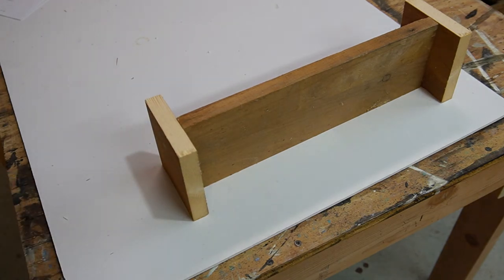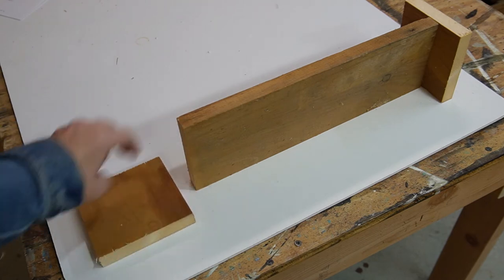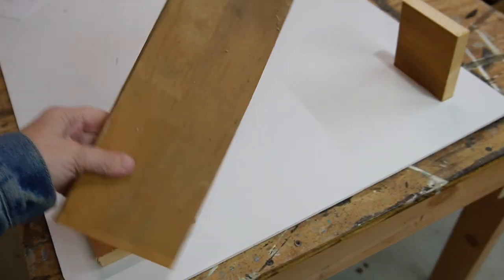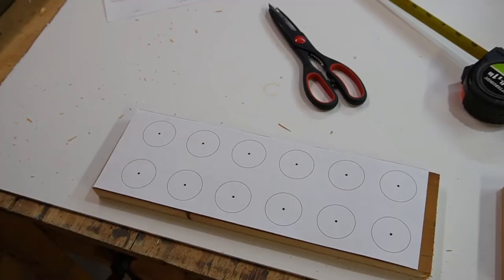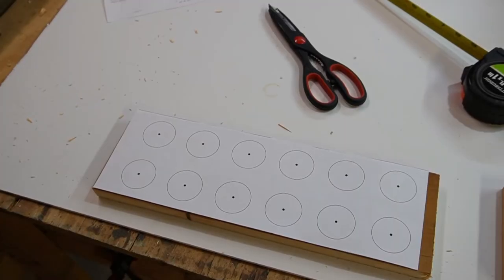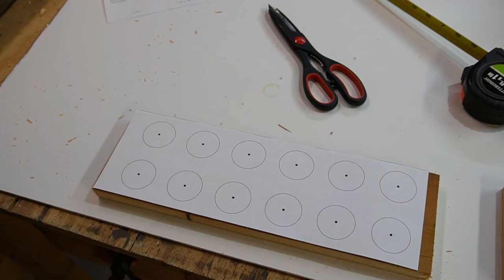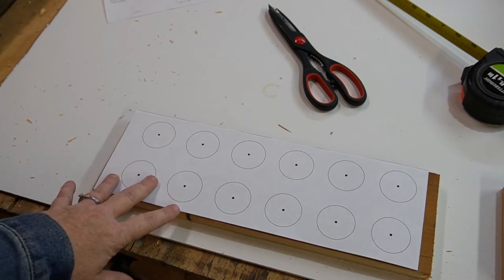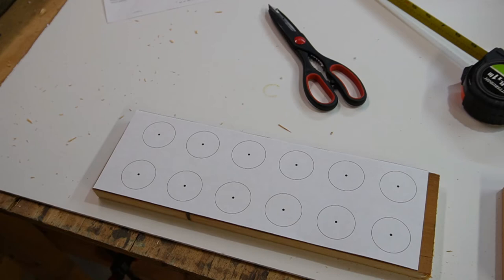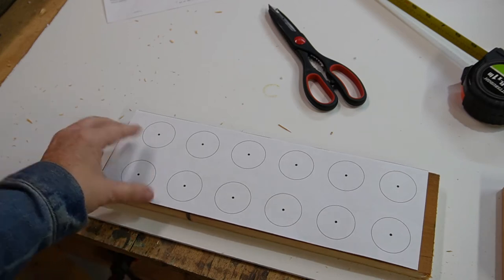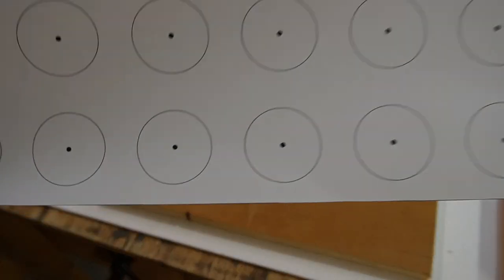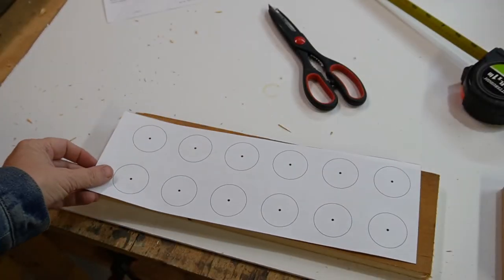But the first thing that we have to do is drill our holes in this board for our eggs. In order to get proper spacing on the egg holes that I needed to drill, I just made a template on my computer and made room for one and a half inch holes. And then put a dot in the middle.